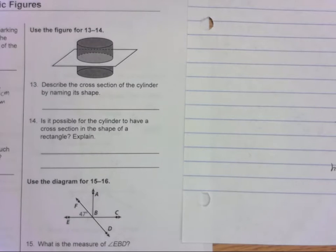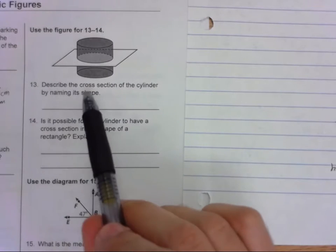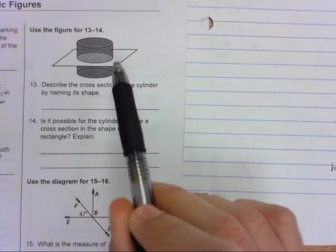Let's look at 13 and 14 on the module 8 study guide. Describe the cross-section of the cylinder by naming its shape. So describe by naming its shape.